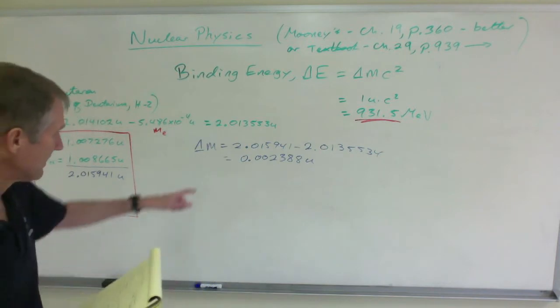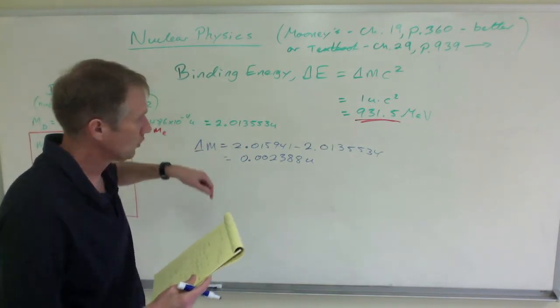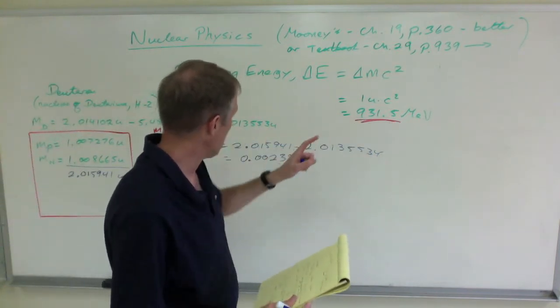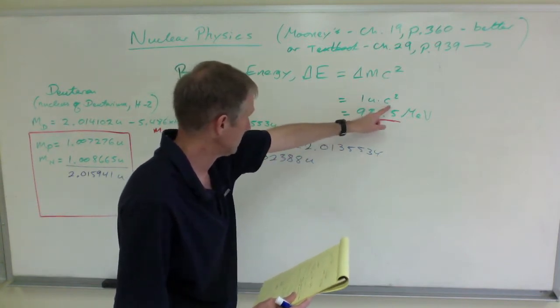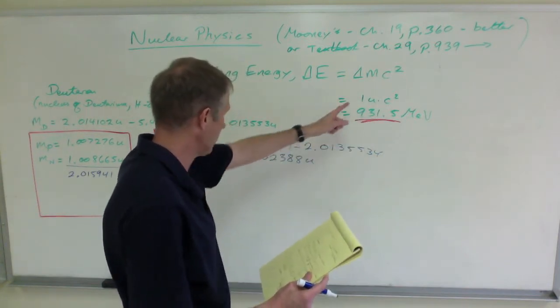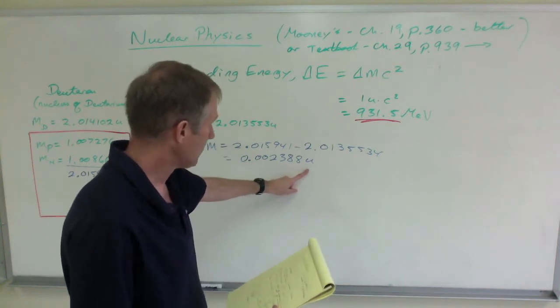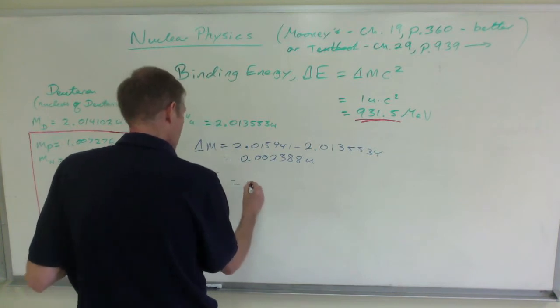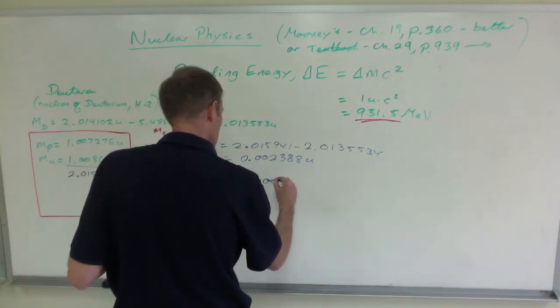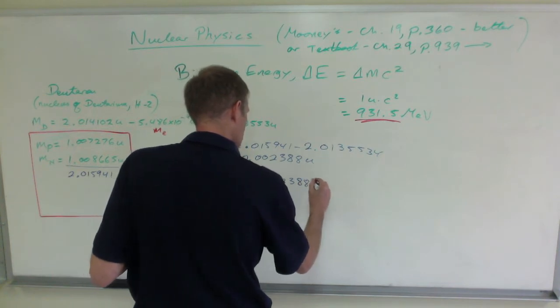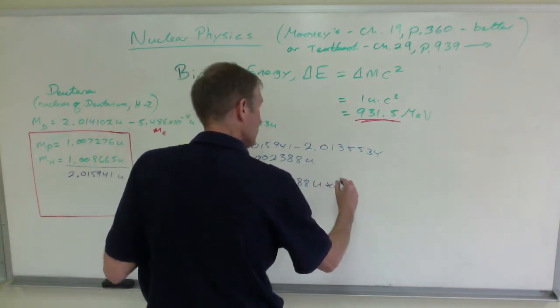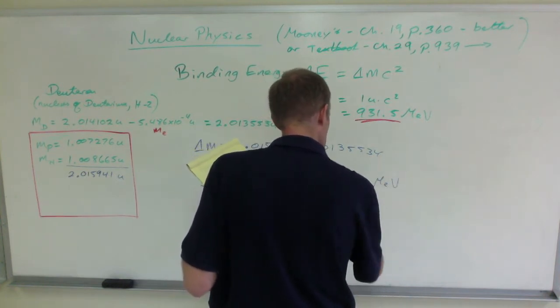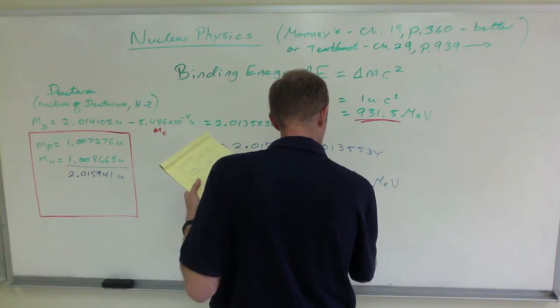To turn this into an energy, that's the difference in terms of masses. To turn it into an energy, we just have to multiply by that. Because remember that 1u times c squared is that. Well, I don't have 1u. I have that many u's.